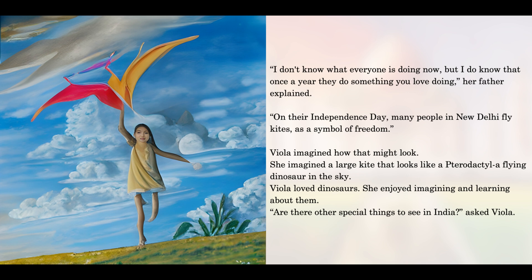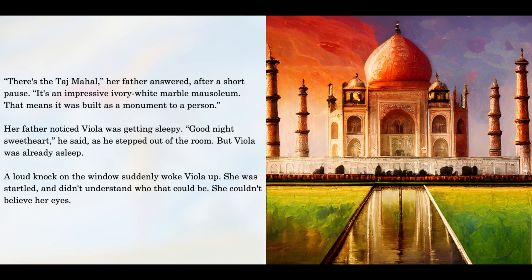Viola imagined how that might look. She imagined a large kite that looks like a pterodactyl, a flying dinosaur in the sky. Viola loved dinosaurs. She enjoyed imagining and learning about them. "Are there other special things to see in India?" asked Viola. "There's the Taj Mahal," her father answered after a short pause. "It's an impressive ivory-white marble mausoleum. That means it was built as a monument to a person." Her father noticed Viola was getting sleepy. "Good night, sweetheart," he said, as he stepped out of the room. But Viola was already asleep.